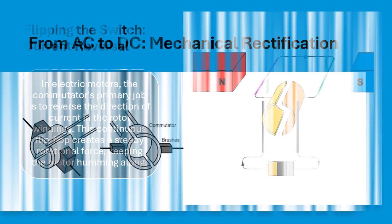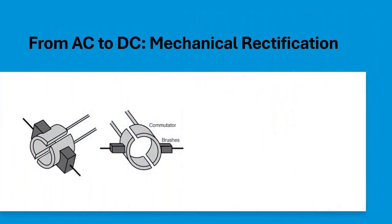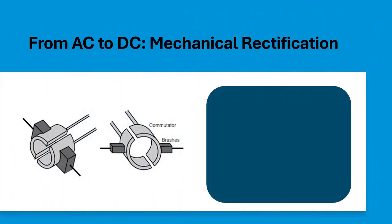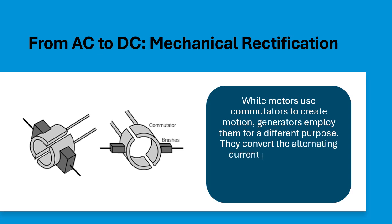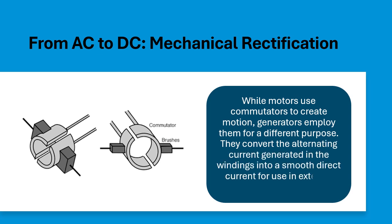From AC to DC — mechanical rectification. While motors use commutators to create motion, generators employ them for a different purpose. They convert the alternating current generated in the windings into a smooth direct current for use in external circuits.